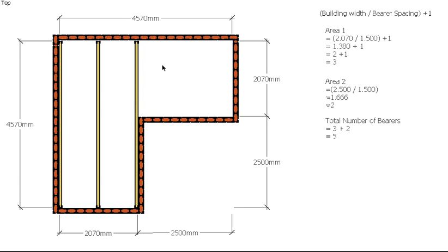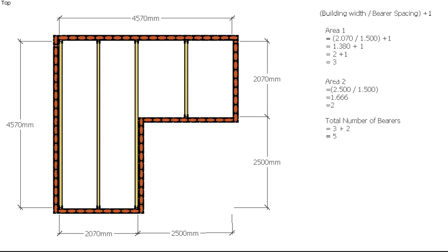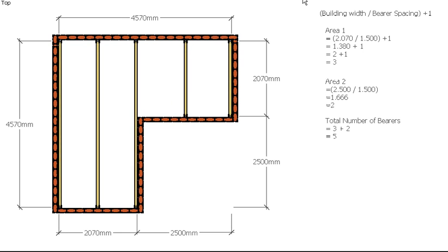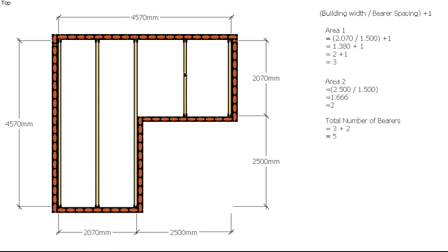That gives me 5 bearers in total. I'll put those two into place — now I've got all my bearers and none of them exceed my maximum bearer spacing of 1.5m. We have all our bearers that we need: 5 bearers in total.